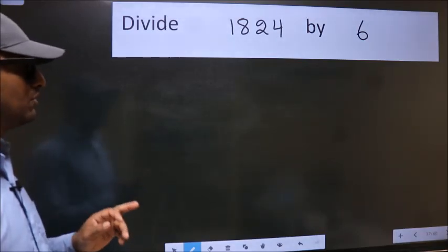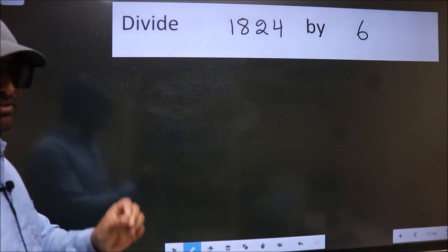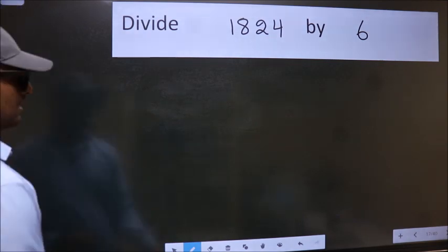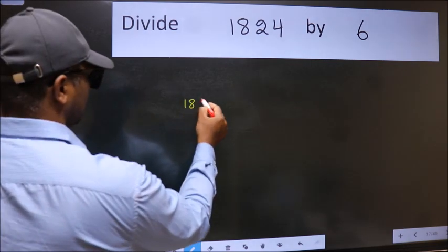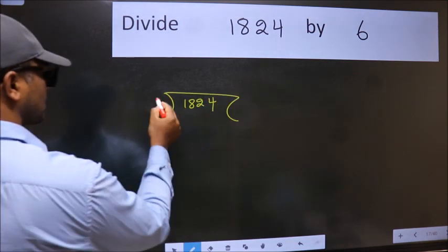Divide 1824 by 6. To do this division, we should frame it in this way: 1824 here, 6 here.